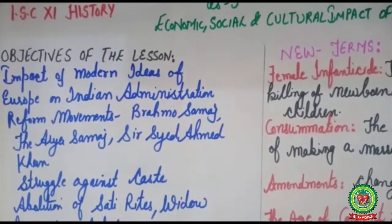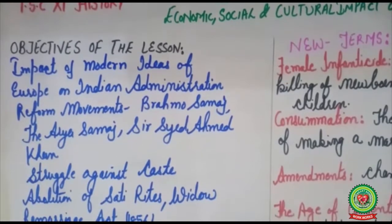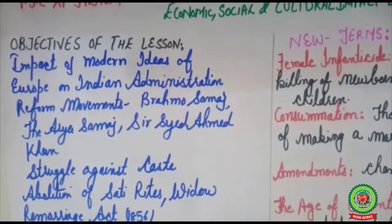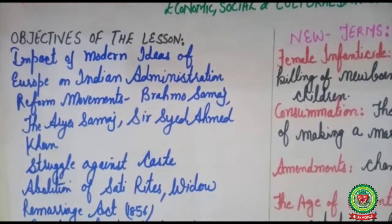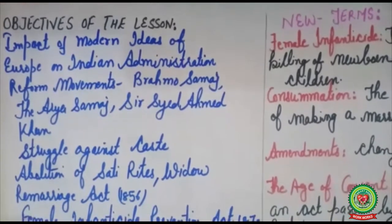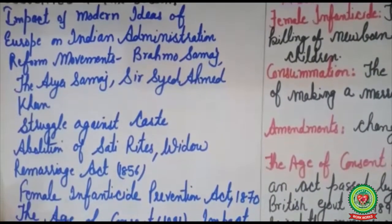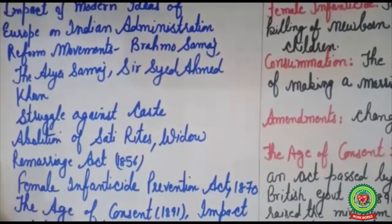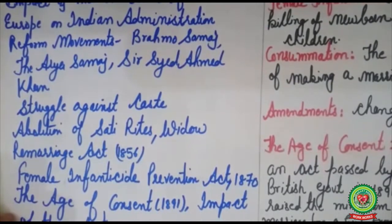In our previous sessions, we had already discussed the impact of modern ideas of Europe on Indian administration, reform movements, Brahmo Samaj, Arya Samaj, Sarsayya Dehmat Khan, struggle against caste, abolition of sati rights, and the Widow Remarriage Act of 1856.